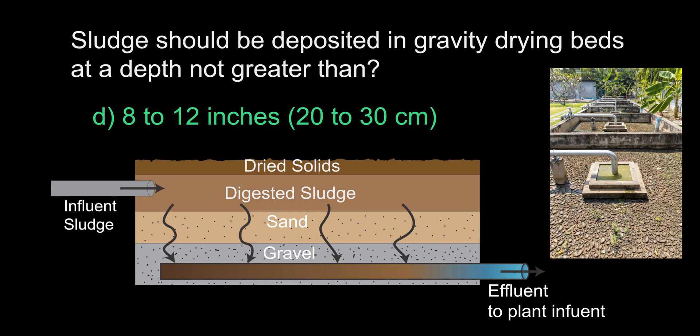The answer is D, 8 to 12 inches. Sludge drying beds provide the simplest method of dewatering. A digested sludge slurry is spread on an open bed of sand and gravel and allowed to remain until dry. Drying takes place by a combination of evaporation and gravity drainage through the sand and gravel. The excess water is collected in a pipe underneath the bed and returned to the influent of the plant for treatment. The answer of 8 to 12 inches is a general rule and is determined by the plant permit and design.